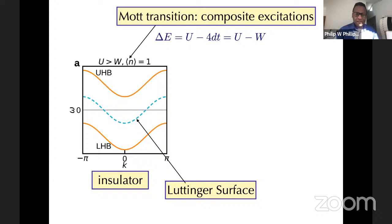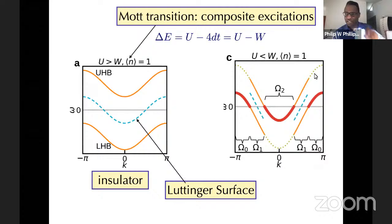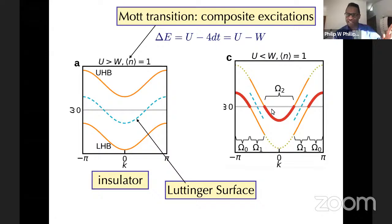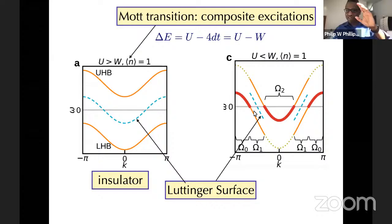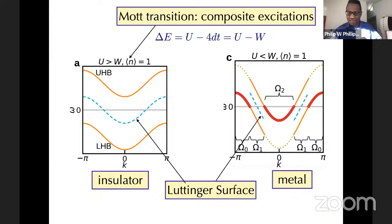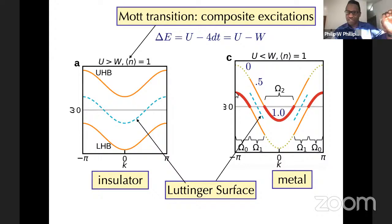The model has a Mott transition. Defining W as the width of the non-interacting band, here is the lower band and the upper band — those are just the dispersions from the Green's function — and this surface is the zero surface. Since these are symmetrically located around the chemical potential, the zero surface is right in the middle. You can change all of this by letting U be less than W — this band will drop below the chemical potential, giving you three kinds of occupancies: empty, singly occupied (where n_k = 0.5), and doubly occupied (n_k = 1).